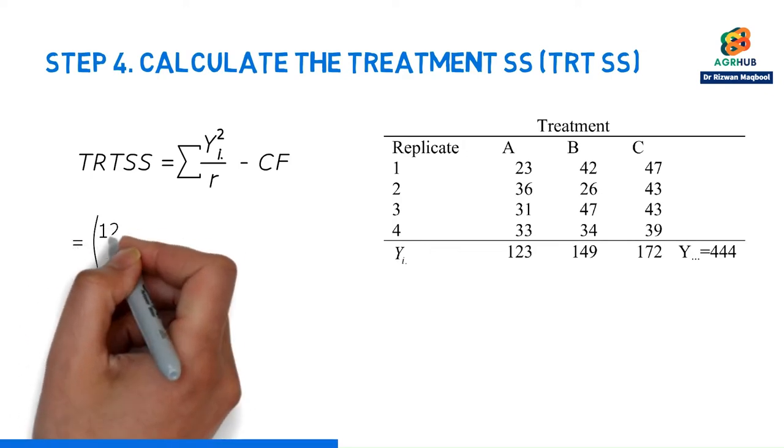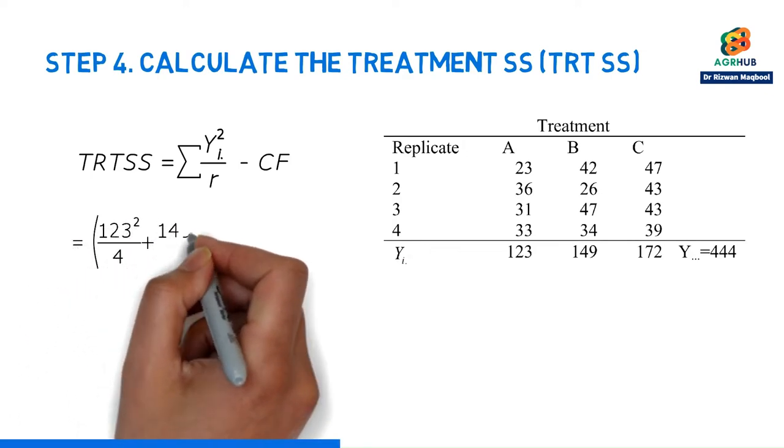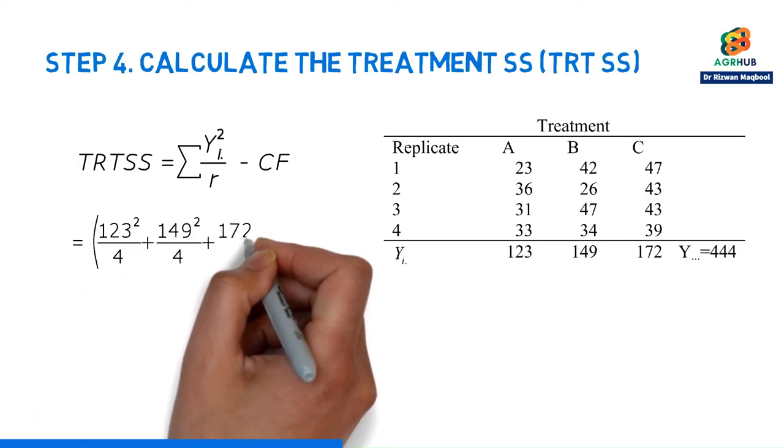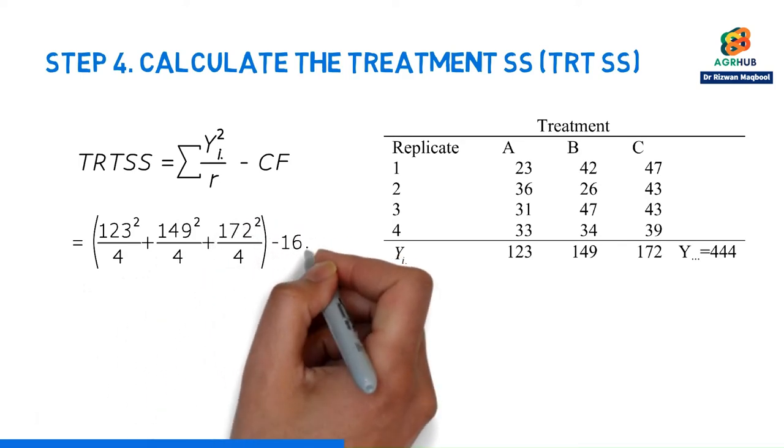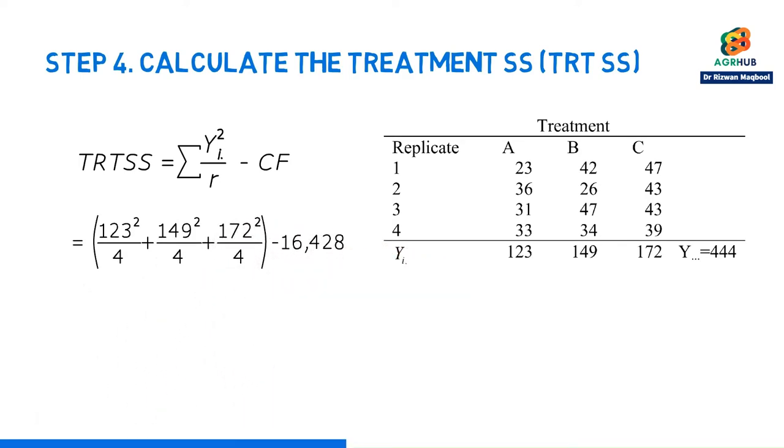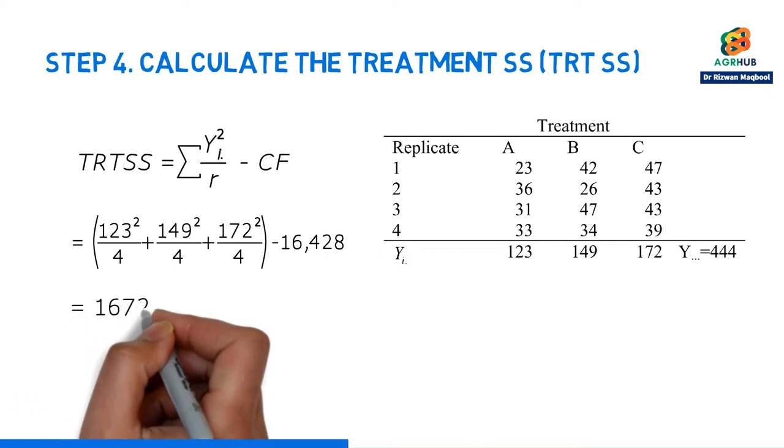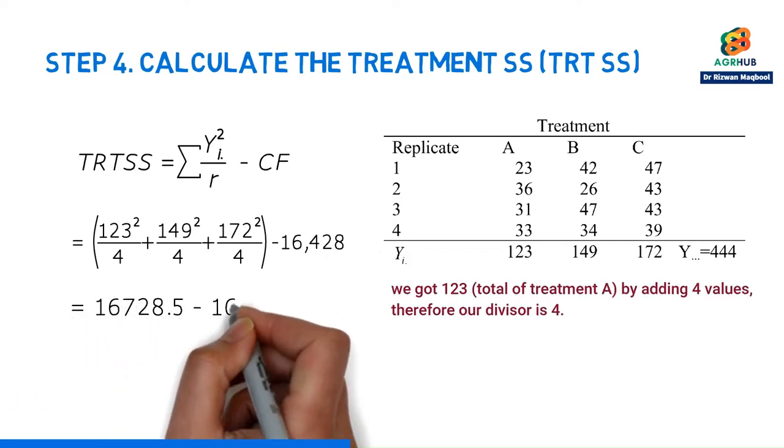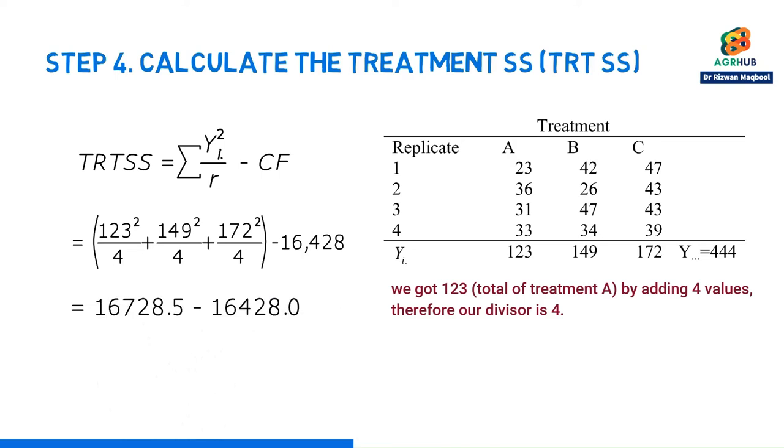So that's 123 squared divided by 4 plus 149 squared divided by 4 plus 172 squared divided by 4. 16728.5 minus correction factor which is 16428.0. The answer is 300.5. This is our treatment sum of squares.